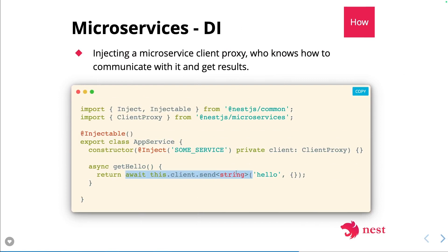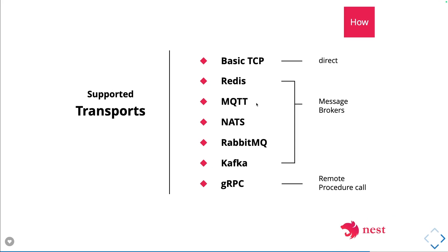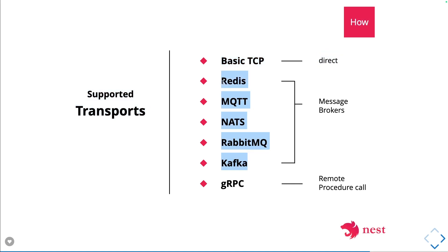You send a command using `await client.send('hello', ...)` to communicate with the external service. NestJS supports multiple communication protocols: gRPC, Kafka, basic TCP, Redis, MQTT, NATS, and more. For synchronous calls where you need a response back from the other service, you use gRPC or basic TCP. For event-driven messaging where you don't need an immediate reply, you use message brokers — the target service handles the event asynchronously.